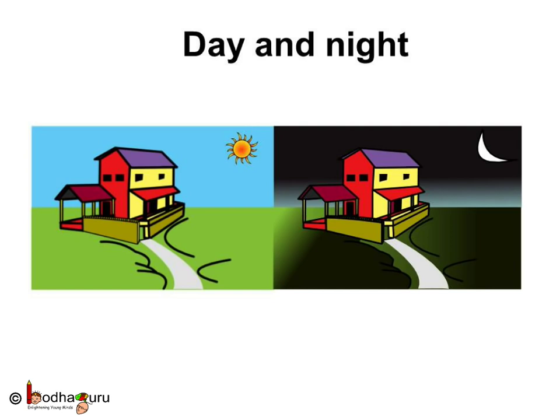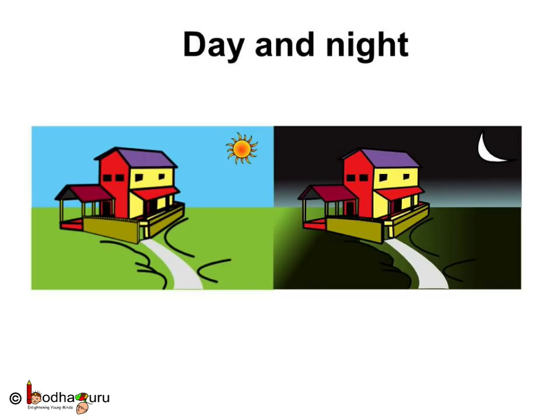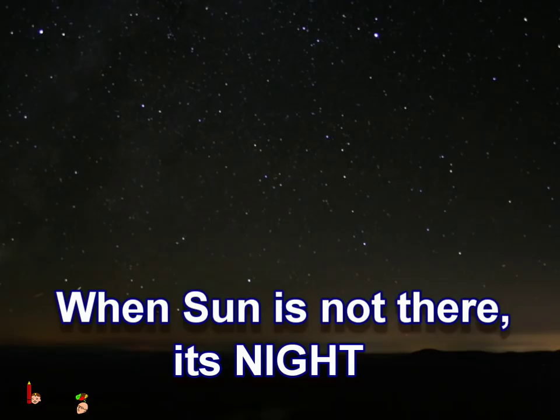So what is day and night? When there is natural light, that is we see sun shining in the sky, we know it is day. And when we don't see the sun, we call it night.